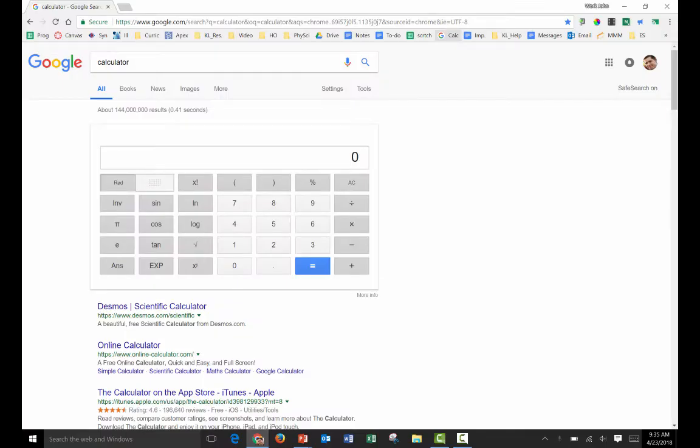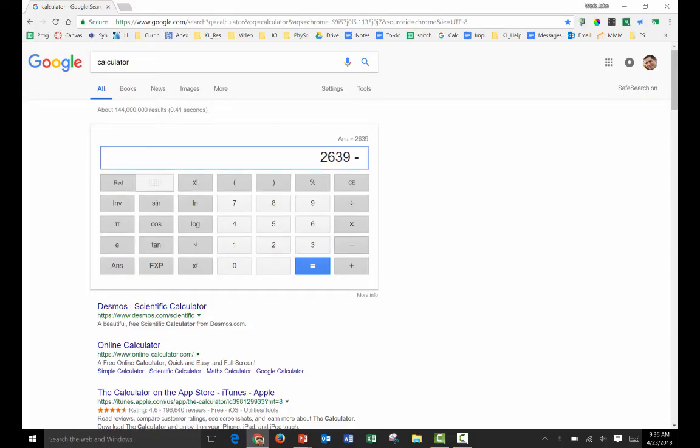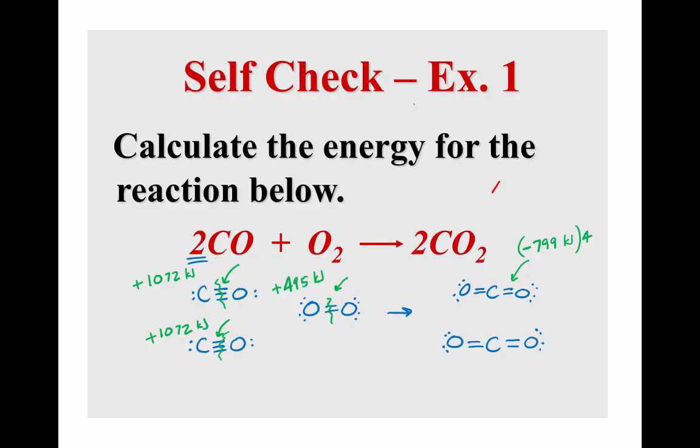So at this point, let me get out a calculator. So I'm going to add up 1072 twice, plus 495. So that's all the energy that I put into this reaction. And then I'm going to release 799 kilojoules four times. So add a negative sign, I'm going to subtract 799 times four. And we end up with a net energy change of minus 557. So negative 557 kilojoules for every mole. So that's how you calculate a bond energy.